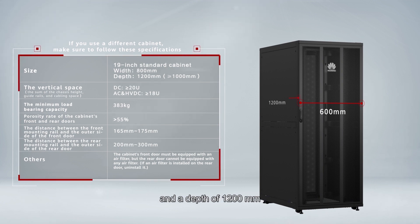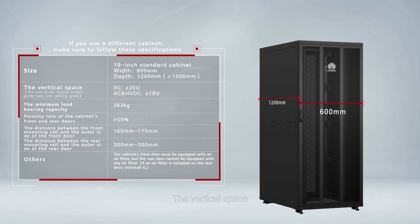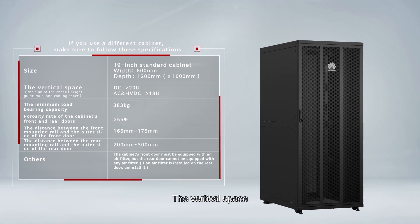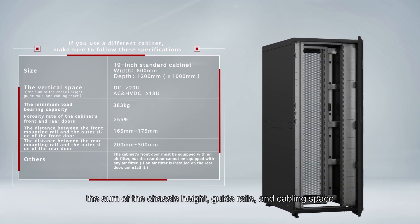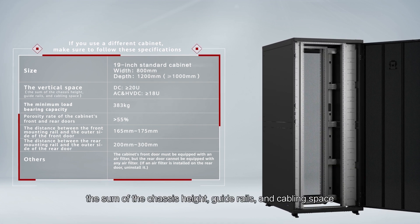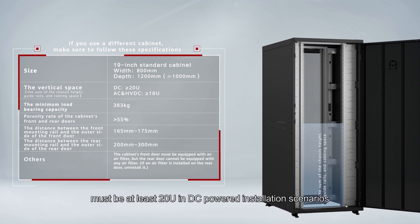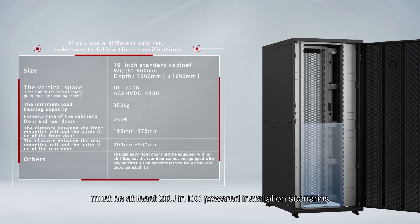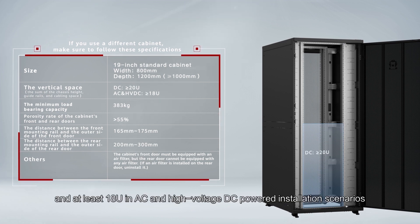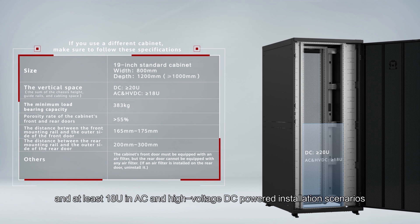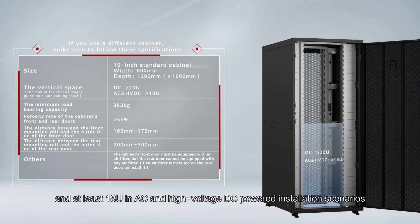Regarding vertical space, the sum of the chassis height, guide rails, and cabling space must be at least 20U in DC-powered installation scenarios, and at least 18U in AC and high-voltage DC powered installation scenarios.